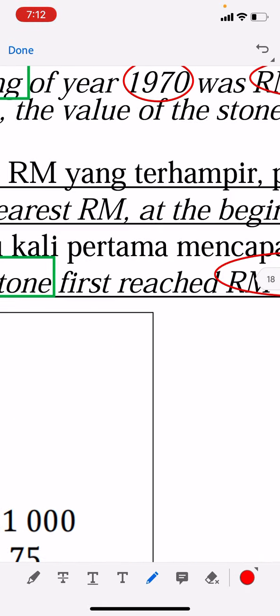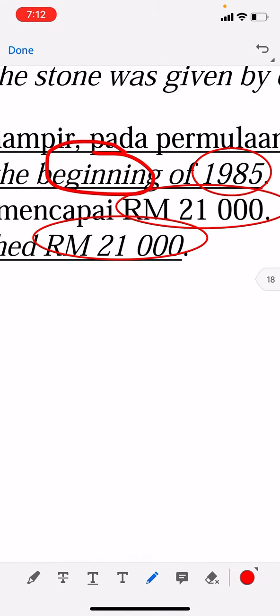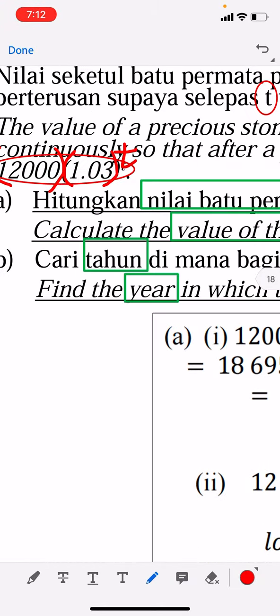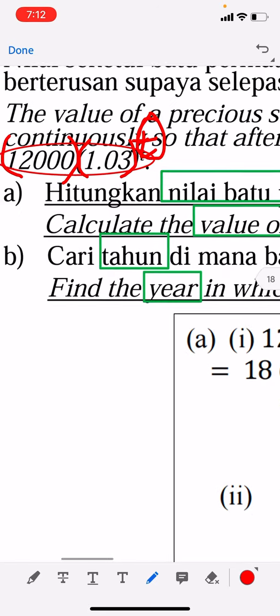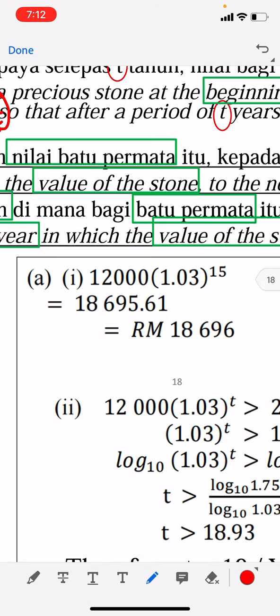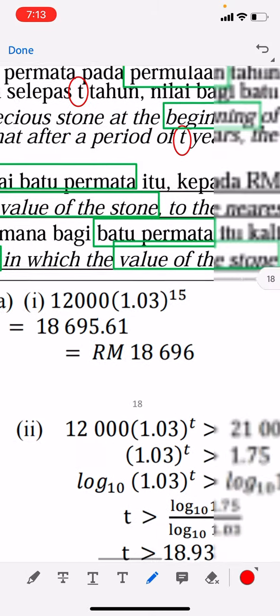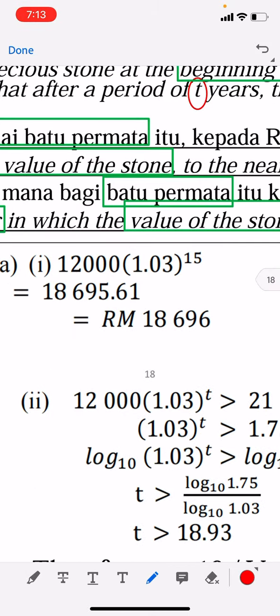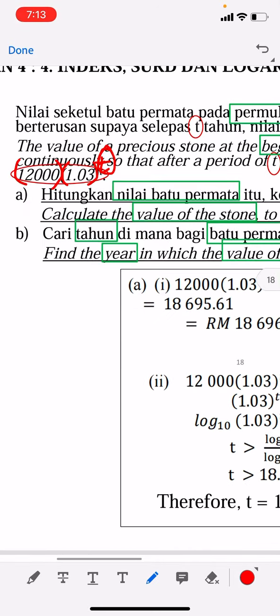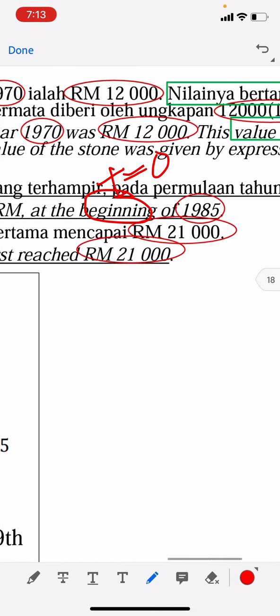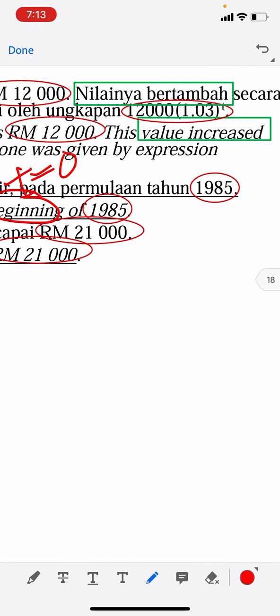to the nearest ringgit Malaysia at the beginning. When you see beginning, it means the time is zero. So what you need to do is substitute t=0 inside here, so you will get that money which is 12,000 times 1.03^0. So at the beginning is quite easy.